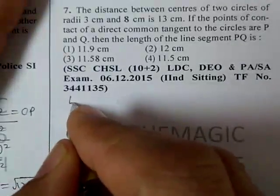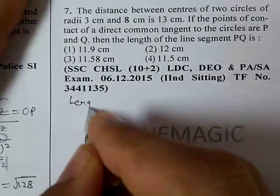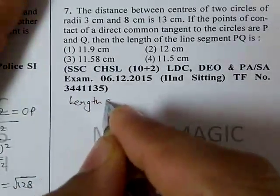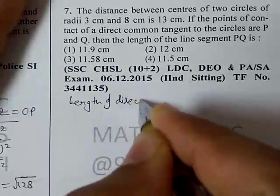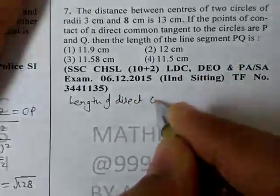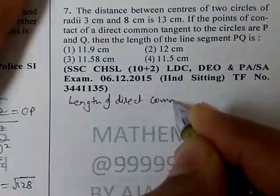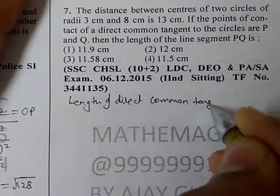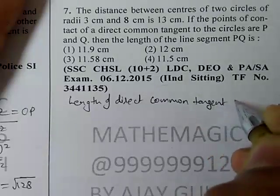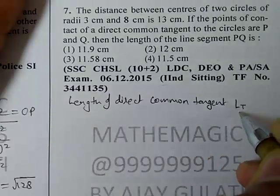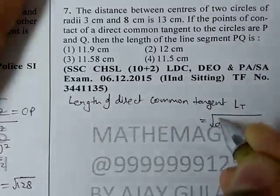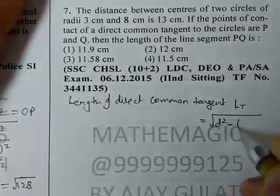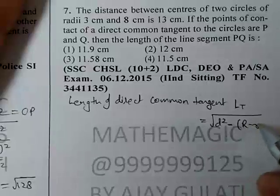The distance between the centers of two circles of radii 3 cm and 8 cm is 13 cm. If the points of contact of a direct common tangent to the circles are P and Q, then find the length of the line segment PQ.